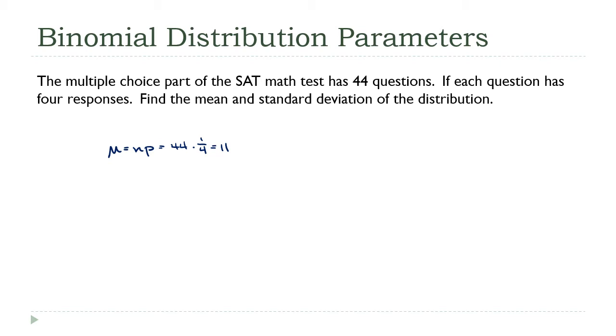On average we expect a person randomly choosing answers to get 11 of them correct. That's a quarter of the total. That kind of fits with the probability, right? We expect them to get a quarter of them correct and three quarters of them wrong.